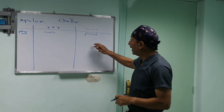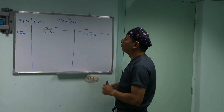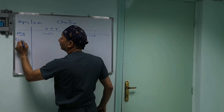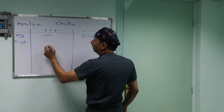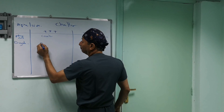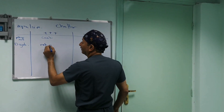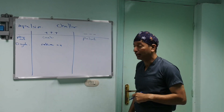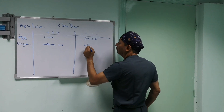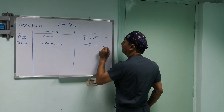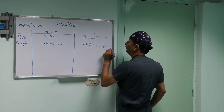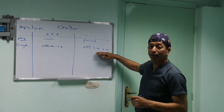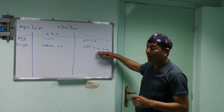If you use pulse phaco, you look at the duty cycle. If the on-time is increased, that will increase your chatter. If the off-time is increased, that will decrease your chatter. So if you turn to pulse and decrease your on-time and increase your off-time, this should decrease your chatter.